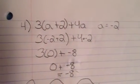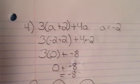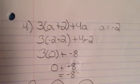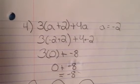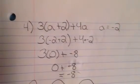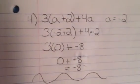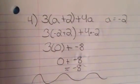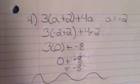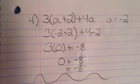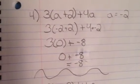So, when you substitute, you will get 3 parentheses negative 2 plus 2 parentheses plus 4 times negative 2. After working that equation, it comes out to 3 times 0 plus negative 8. 3 times 0 is 0. 0 plus negative 8 equals negative 8.